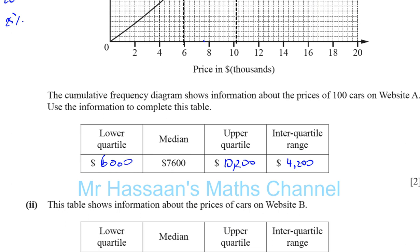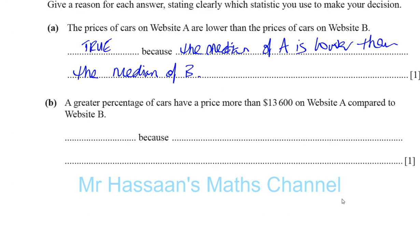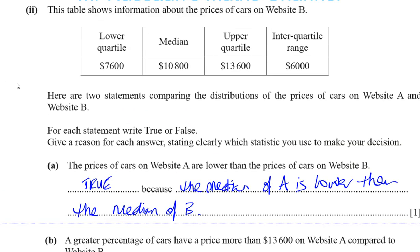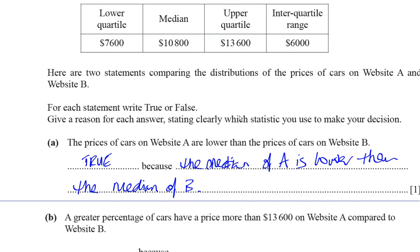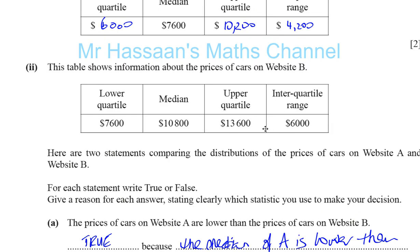Part B says: a greater percentage of cars have a price more than thirteen thousand six hundred on website A compared to website B. For website B, the upper quartile is thirteen thousand six hundred, which is the 75th percentile — so twenty-five percent of cars on website B have a price greater than thirteen thousand six hundred.